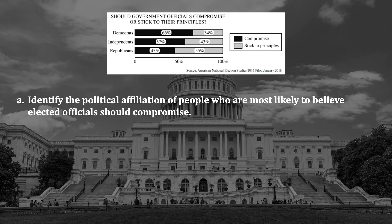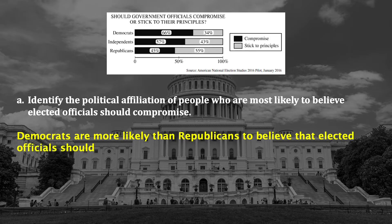Part A says: Identify the political affiliation of people who are most likely to believe elected officials should compromise. It only takes one sentence to respond to an identify prompt. The great thing about it is that it counts just as much as describe and explain, even though those are tougher. Here's a sample correct answer for A — it's really that easy.